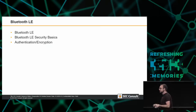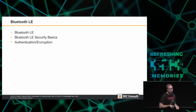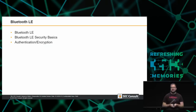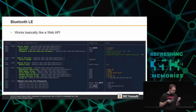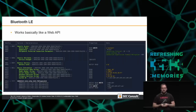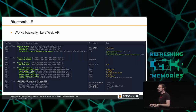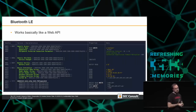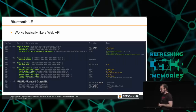Before I tell you about the vulnerabilities I identified, I'll explain Bluetooth Low Energy in general, the security basics, and how authentication and encryption work at a very high level. Bluetooth Low Energy works basically like a web API — you have API endpoints called service characteristics, and properties you can read and write to. For example, the device name can be read or written. There are also other characteristics important for Remote Pleasure Version 2.0, which I'll mention shortly.